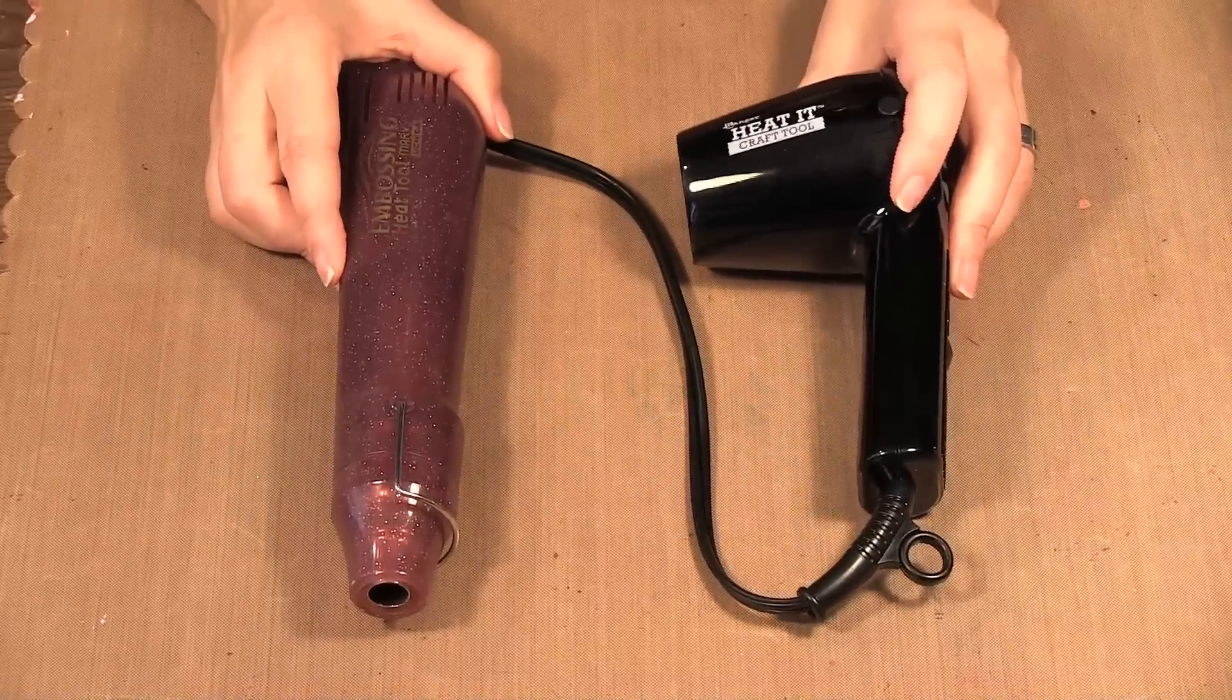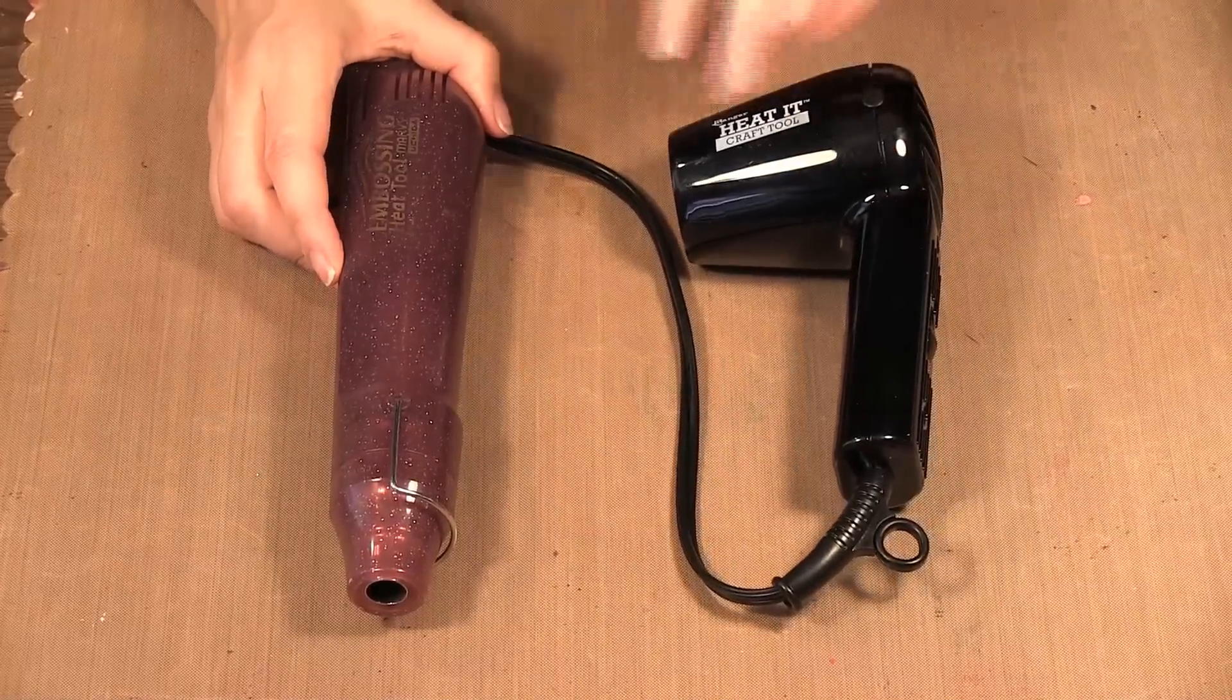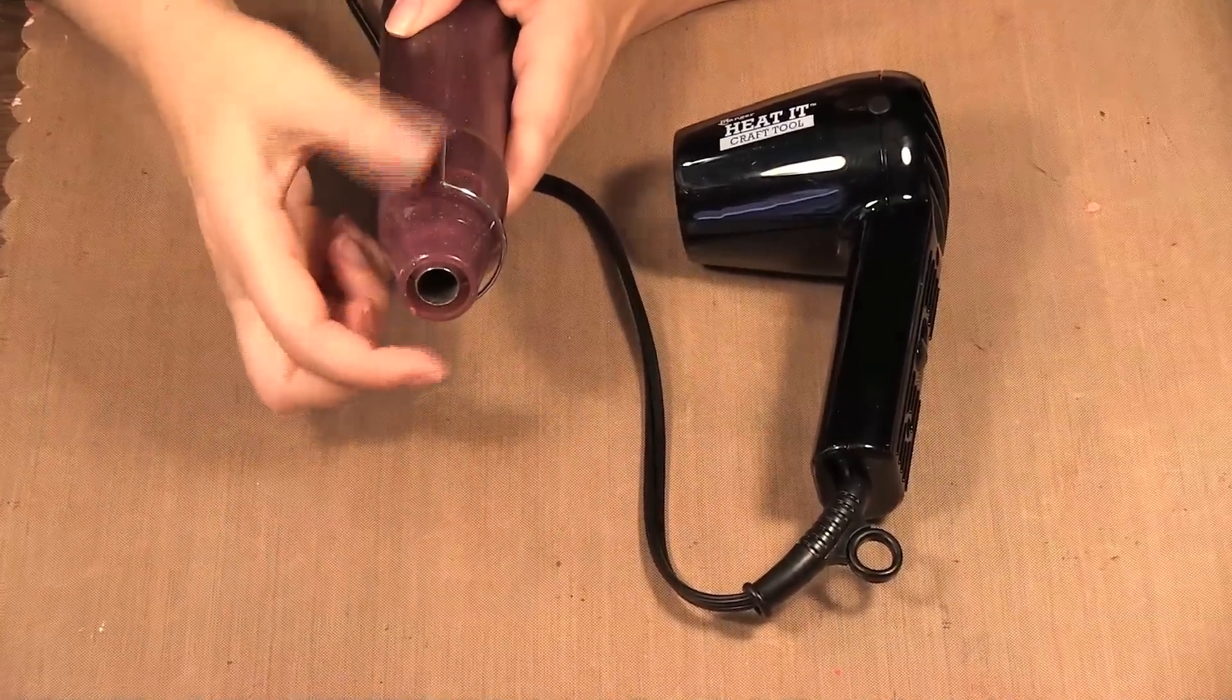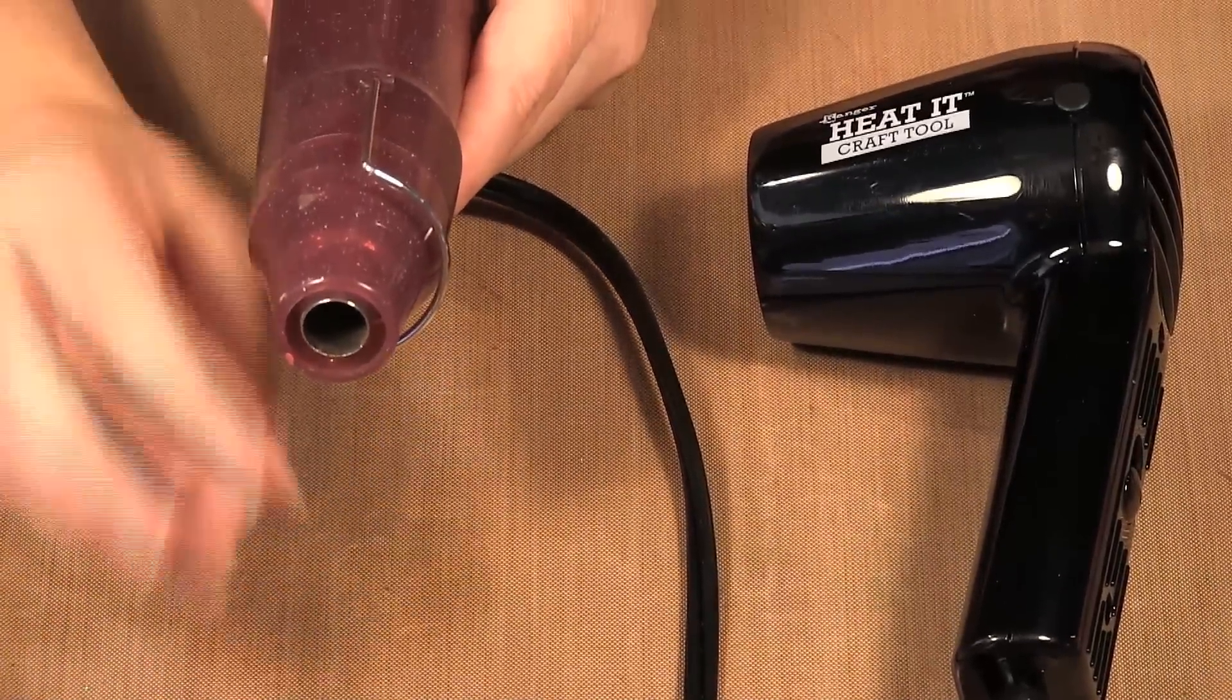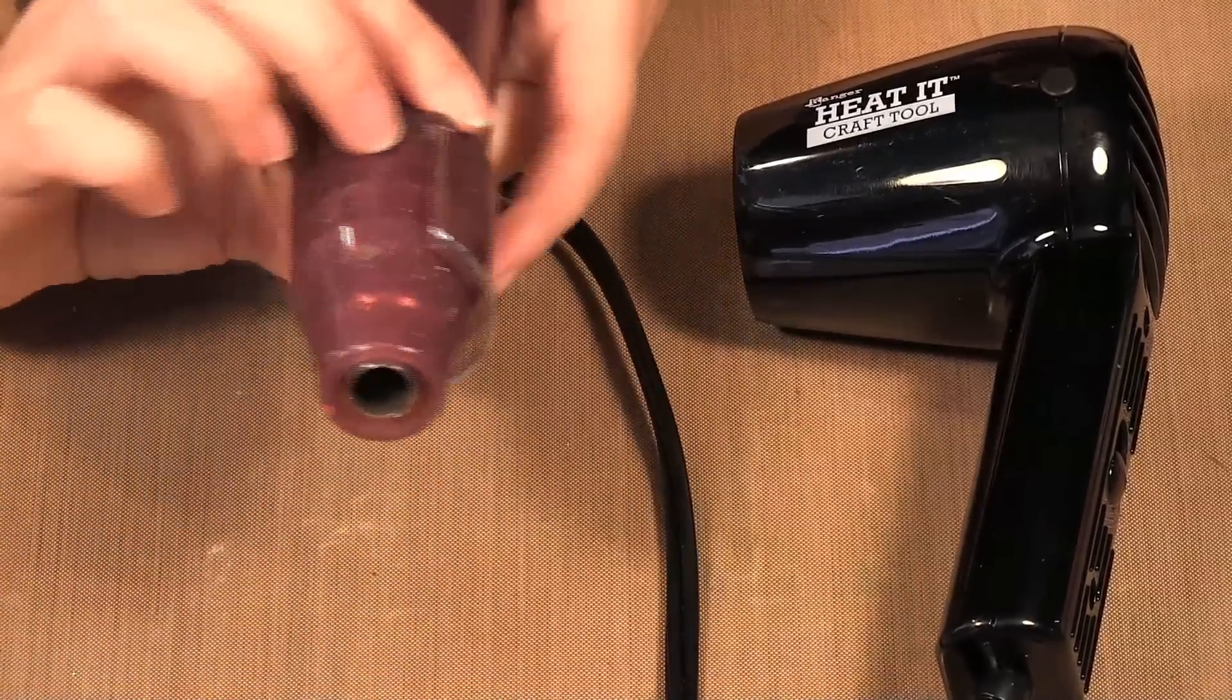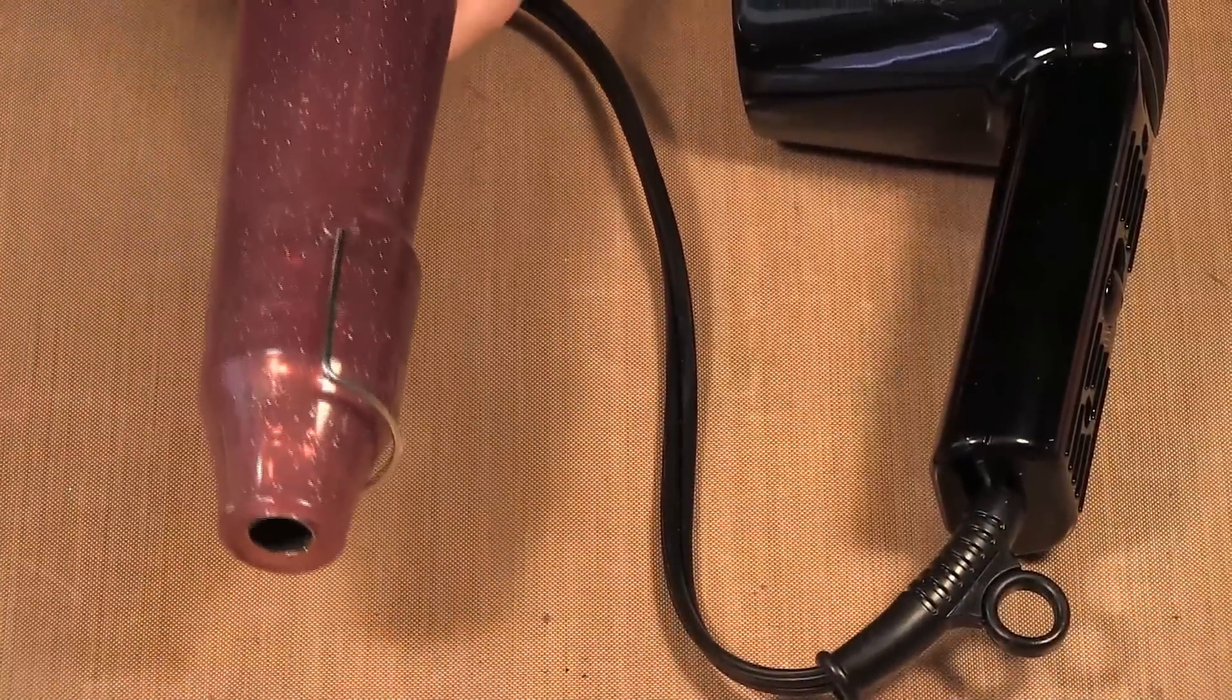Now both of these will emboss. I'm going to do an embossing demo in a bit. The difference is the embossing heat tool has a smaller spout and it's a direct heat so it focuses on a spot and it blows a little harder, so I find that if you're doing embossing the embossing heat tool will do it a lot quicker.